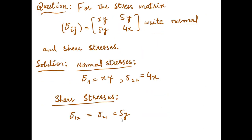The next question: for the stress matrix sigma_ij given, determine the normal and shear stresses. In a stress matrix, the diagonal components are the normal stresses. Here, sigma_11 = xy and sigma_22 = 4x are the normal stresses. The off-diagonal components sigma_12 = sigma_21 = 5y are the shear stresses.